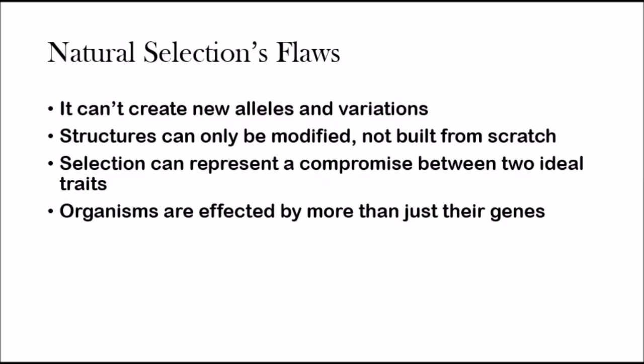Now let's talk about natural selection's flaws. First, it can't create new alleles and variations — it just cuts out individuals and never creates new ones, which can hurt a population. Sometimes genetic variation preservation can't save a population and it just gets wiped out because natural selection ruined the variation. Another flaw: structures can be modified but not built from scratch — natural selection can slightly change a structure over time, but it can't create a completely new structure, which can sometimes be a disadvantage.